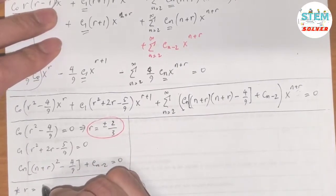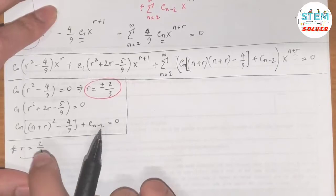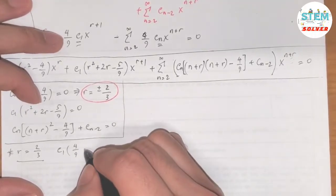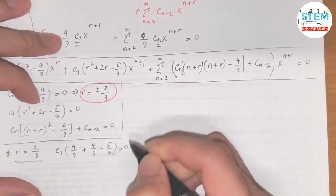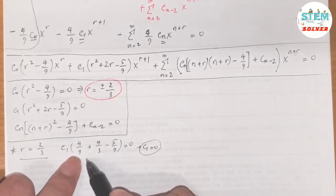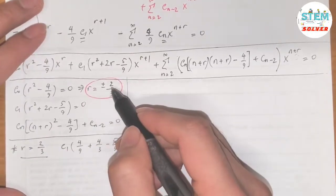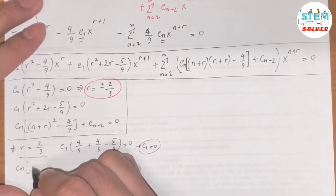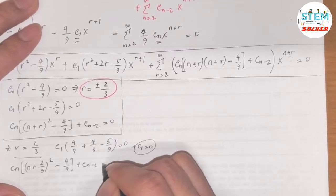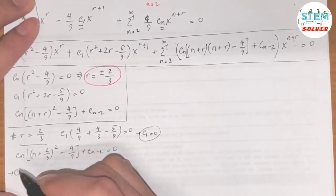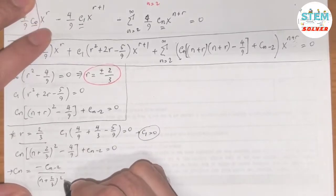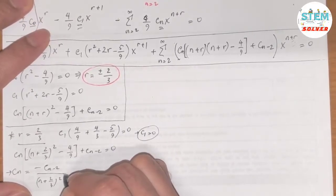Case 1: r = 2/3. Plugging into the c1 equation: c1·[(2/3)² + 2(2/3) − 5/9] = c1·[4/9 + 4/3 − 5/9] = 0. Since the bracket is non-zero, c1 must equal 0. The recurrence relation becomes cn·[(n + 2/3)² − 4/9] + cn−2 = 0.